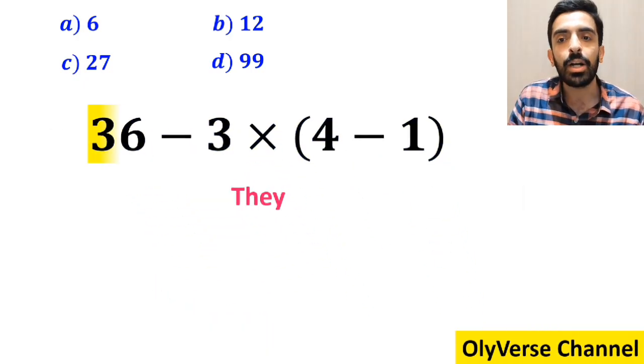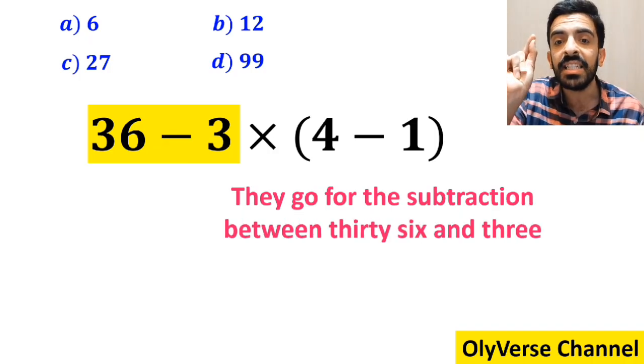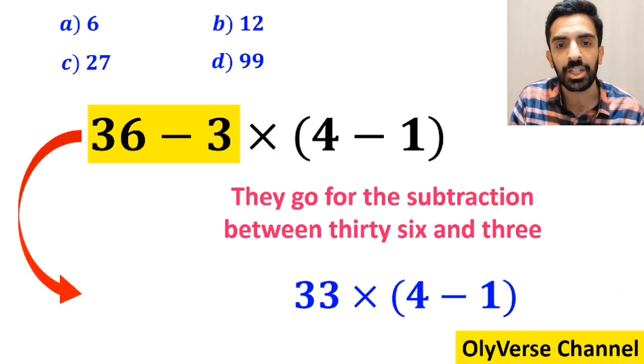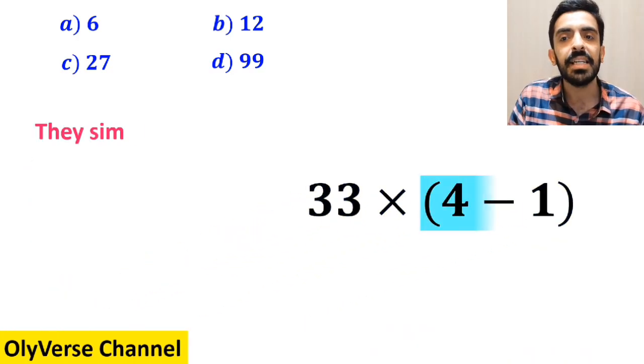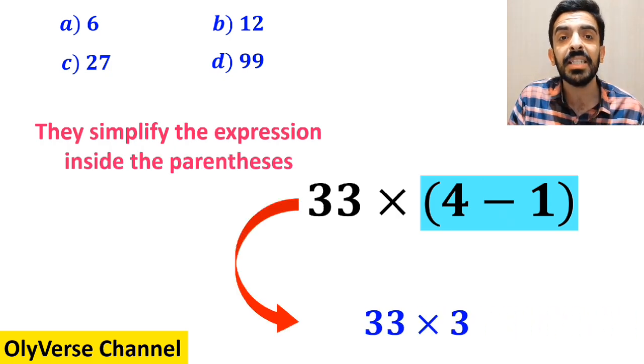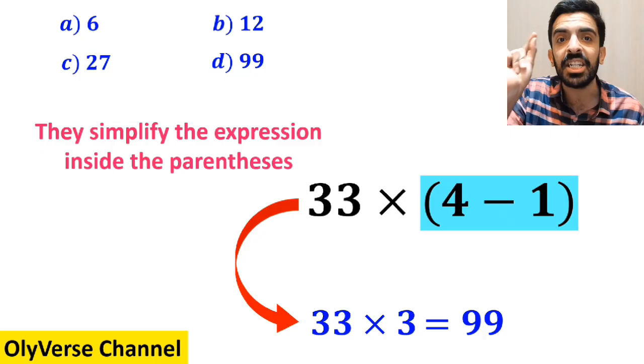And the next step, they go for the subtraction between 36 and 3, which I have highlighted in yellow, and instead of this expression, they write 33 times 4 minus 1 inside the parenthesis. And the final step, they simplify the expression inside the parenthesis, and replace it with 33 multiplied by 3, which gives them the answer 99.